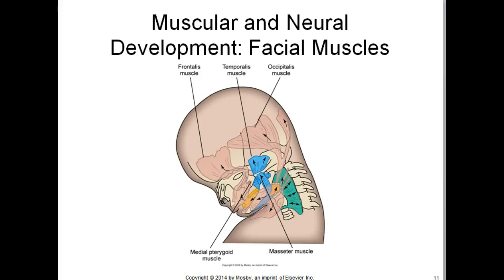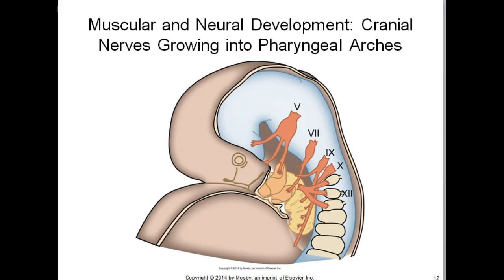This image demonstrates the facial muscles growing from the second pharyngeal or branchial arch to cover the face, the scalp, and the muscles posterior to the ear. The nerves develop in conjunction with the developing muscle fibers. By the end of the seventh week, the fibers of the fifth cranial nerve have entered the mandibular muscle mass, and the seventh nerve has entered the facial muscle mass.